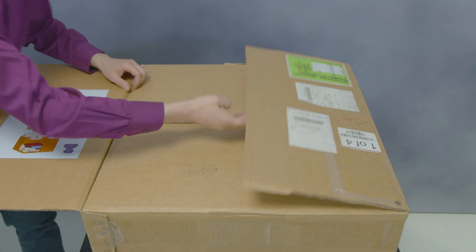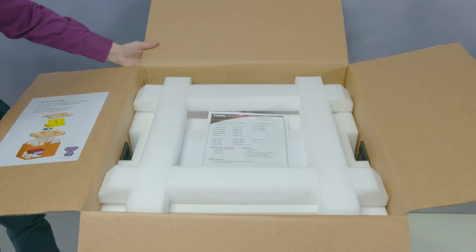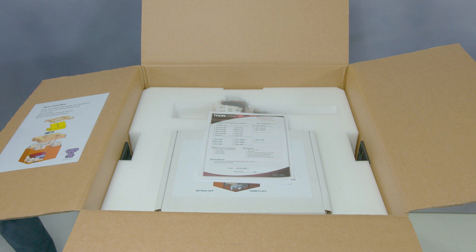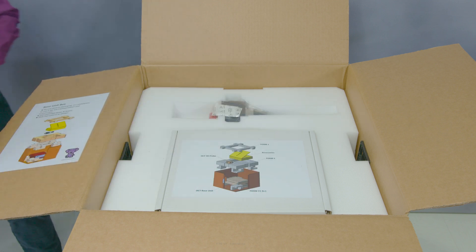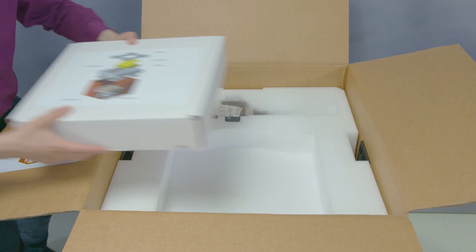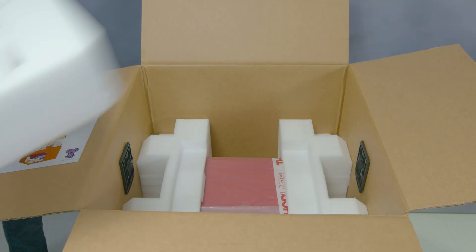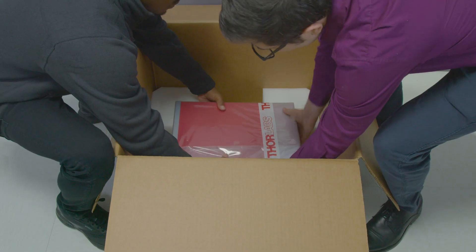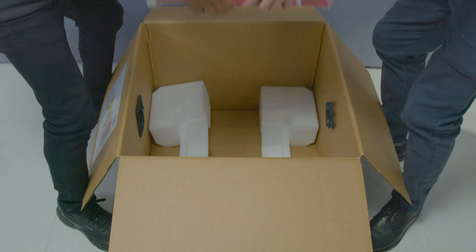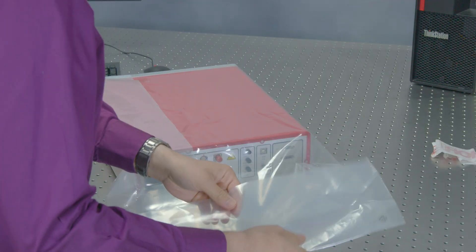Open the box labeled OCT system. A packing list and quick start guide are included on the OCT base unit. Use two people to lift the OCT unit out of the box. Carefully unpack the additional components.